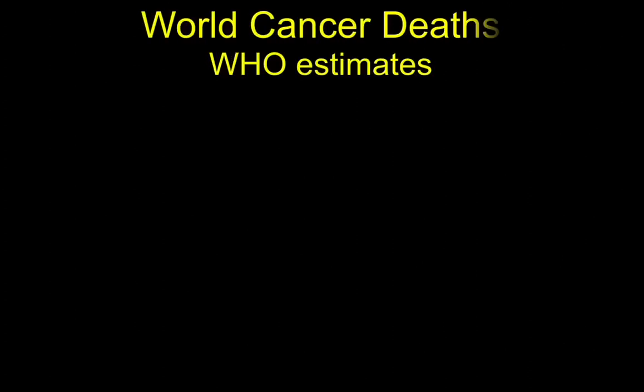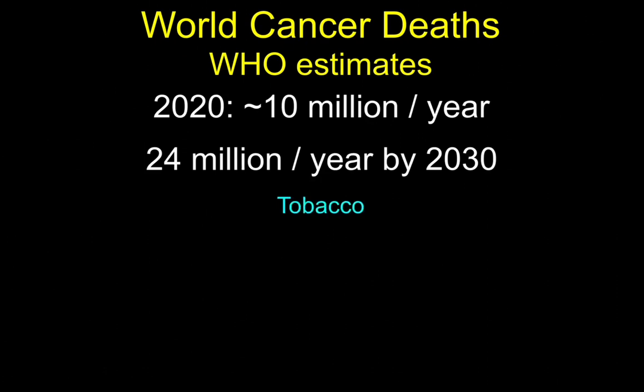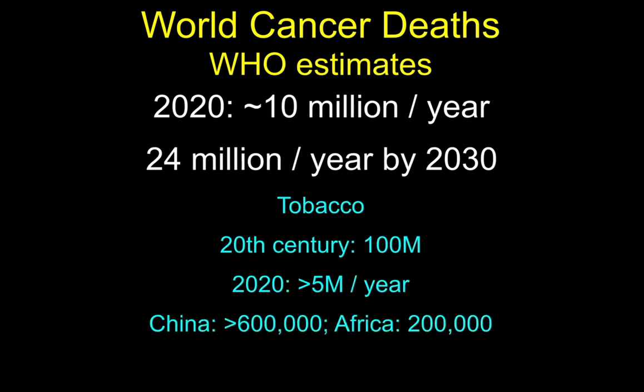With those aims in mind, we need to get on. Before turning to cellular aspects of cancer, just a few more words about epidemiology. The World Health Organization estimates that this year there will be about 10 million deaths globally from cancers, but that by 2030 that figure will have risen to around 24 million deaths per year. Of the causes of cancer, tobacco is by far the most significant, and of course it's one over which in principle we have control.